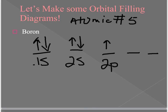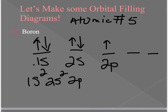We can shorten orbital filling diagrams by creating electron configurations, which show the same information without the individual orbitals and arrows. The electron configuration for boron is 1s², 2s², 2p¹. We tend to work more with electron configurations because they're shorter, and you'll be learning ways to shorten them further since there are many elements on the periodic table.